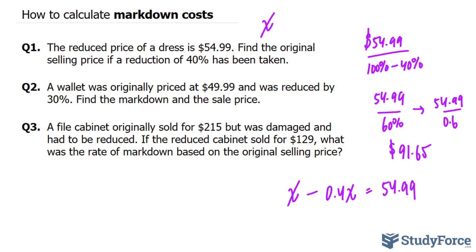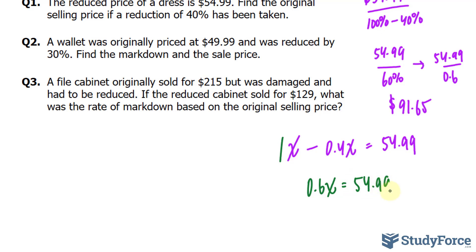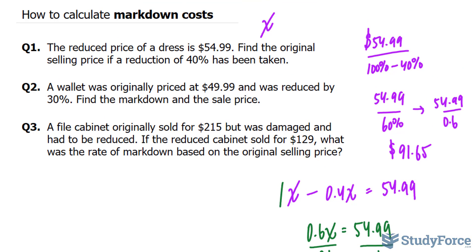In algebra, we learned that if you have two terms with the same variable, you can add or subtract the coefficients. So I'll take 1 minus 0.4, that's 0.6x, which is equal to $54.99. To isolate for x, we divide both sides by 0.6, and that's exactly the expression that we were using initially. This is a more logical approach, and also a faster, quicker approach.